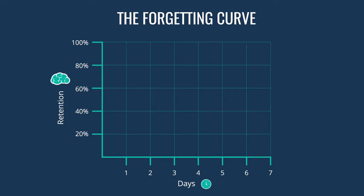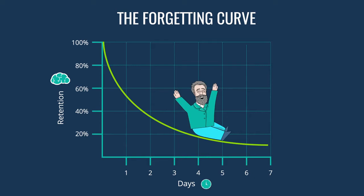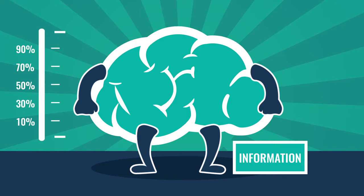His findings showed just how rapidly information seeps out of our brains. Within a month, Herman had forgotten 90% of everything he'd originally learned.